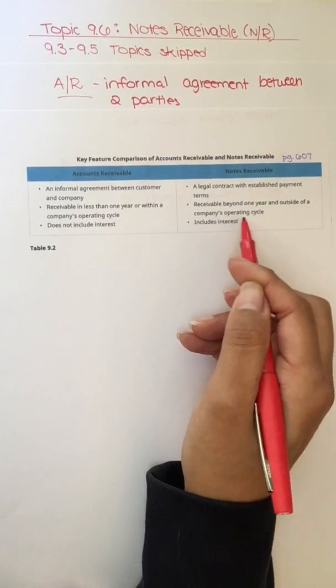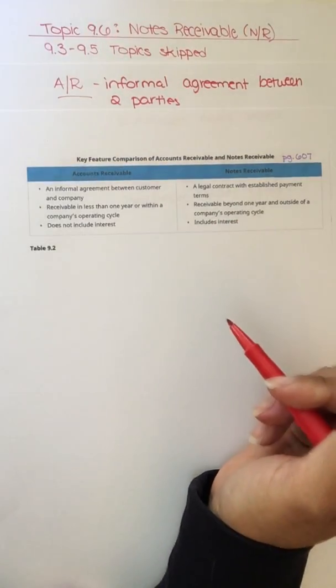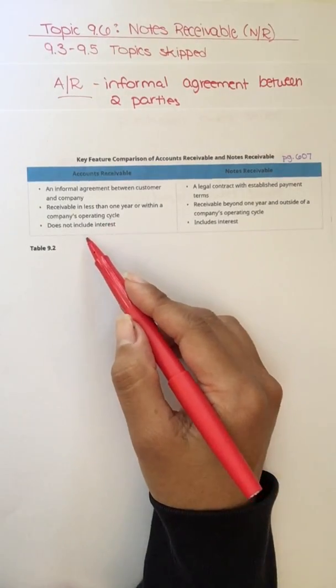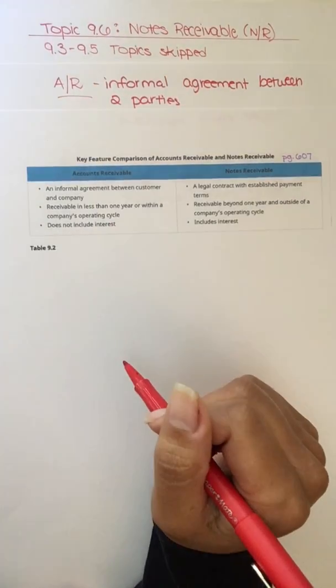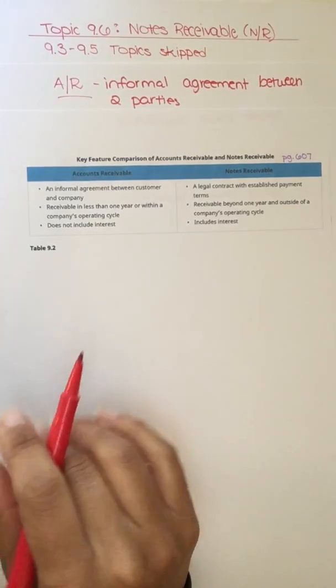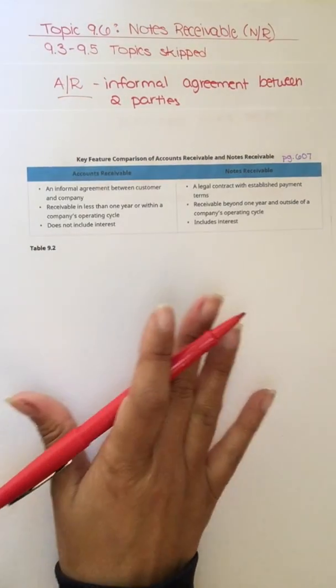Whereas a note receivable is a longer period of time. It can sometimes go beyond the company's operating cycle, so maybe more than a year. Accounts receivable usually does not include interest and notes does include interest. So those are some of the key differences between an AR and an NR.